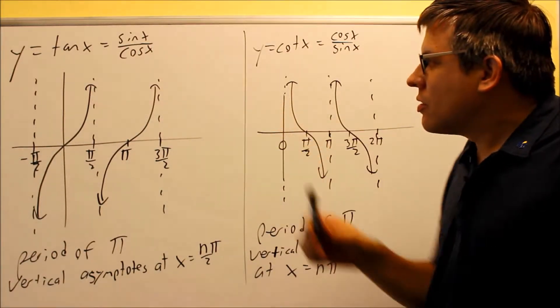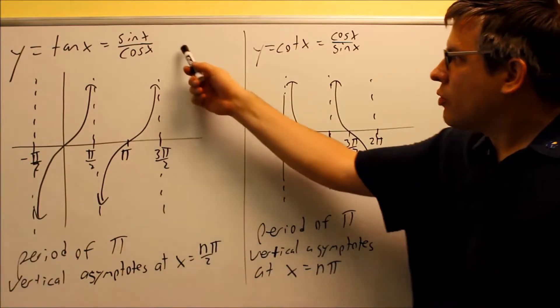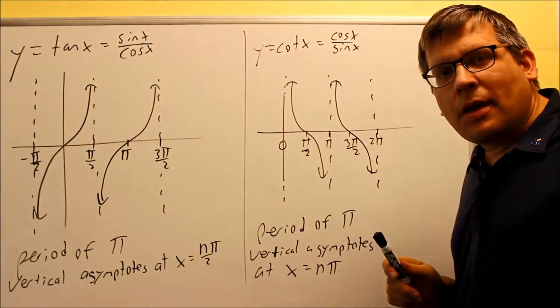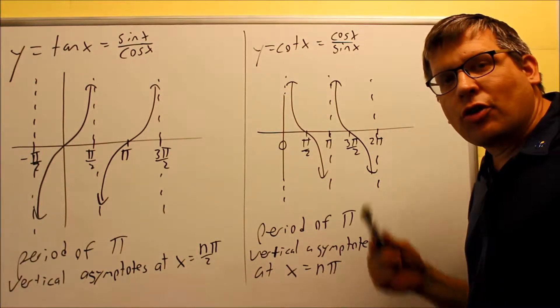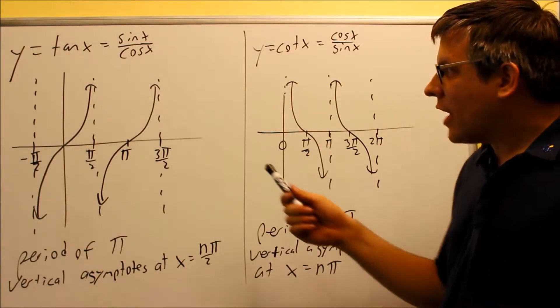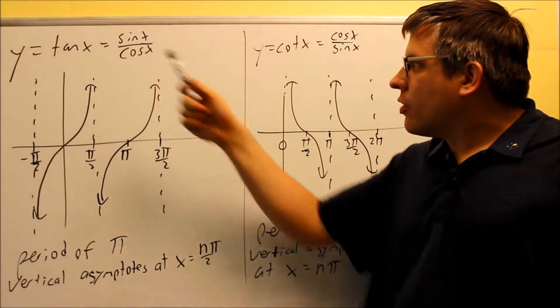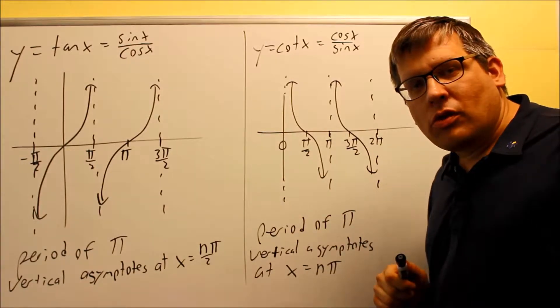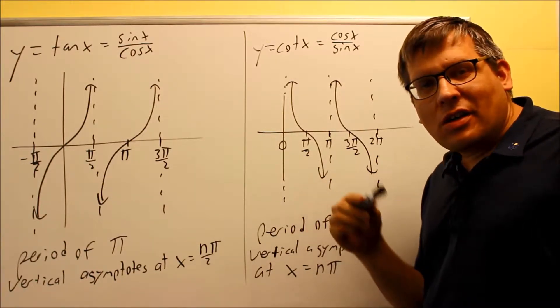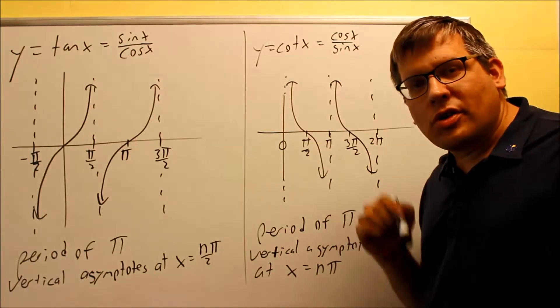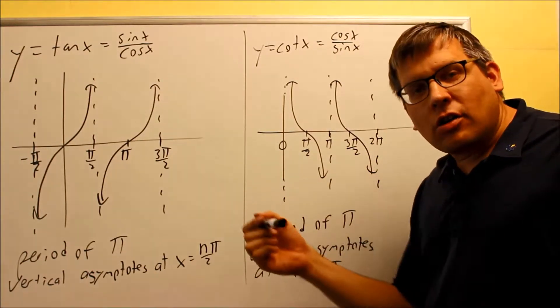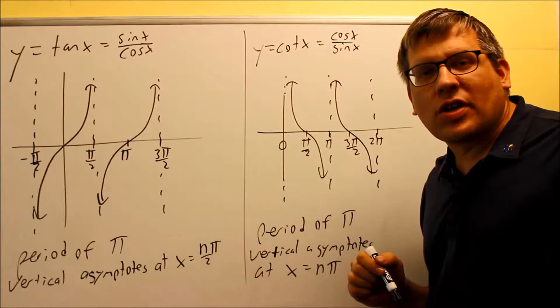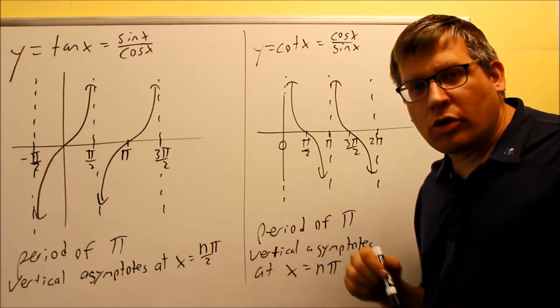So tangent is sine over cosine. Because we have a cosine in the bottom, that means it's possible you could have vertical asymptotes for this one. In fact, they're going to occur wherever the cosine would normally equal zero. So if you look at a unit circle, that means that your cosine value, that's the x value on a unit circle, would be zero at 90 degrees and also 270 degrees. That would be pi over 2 and 3 pi over 2.